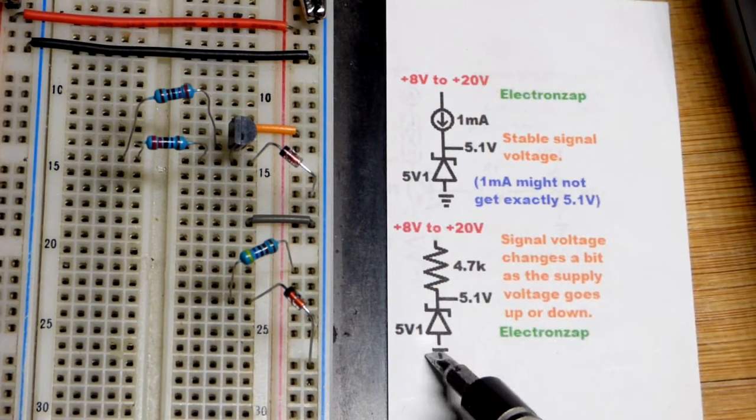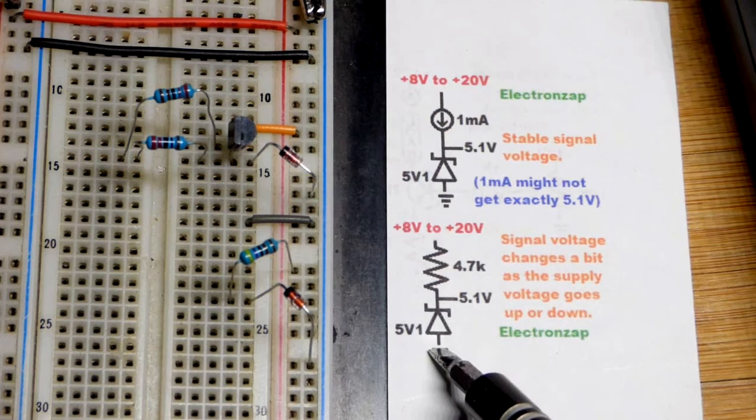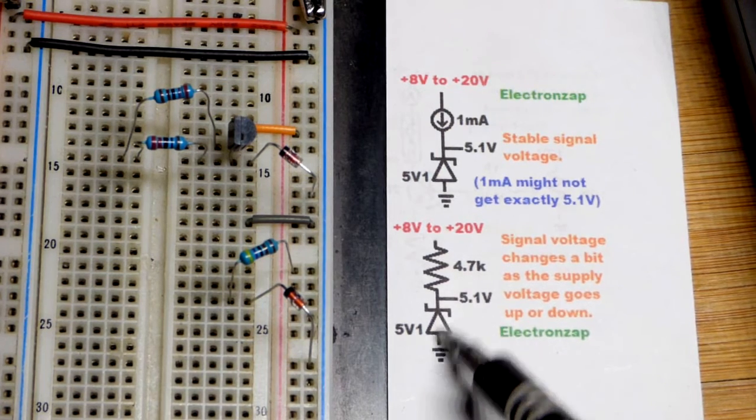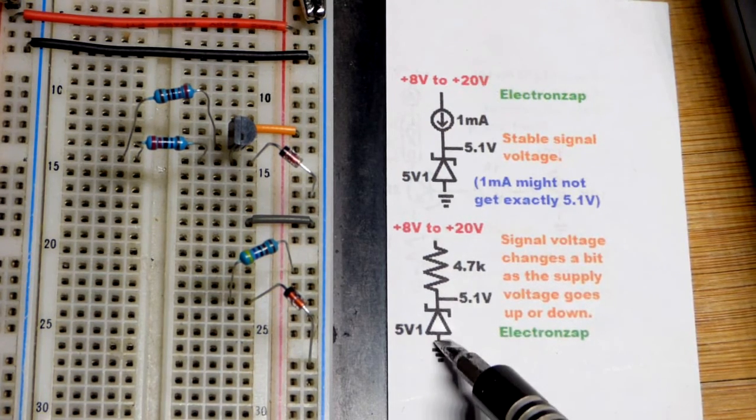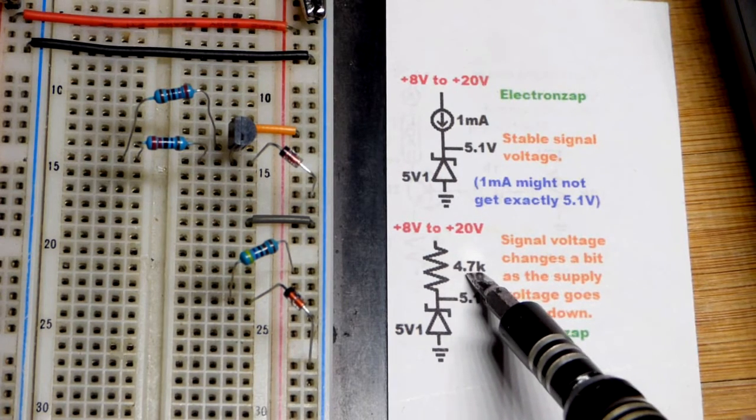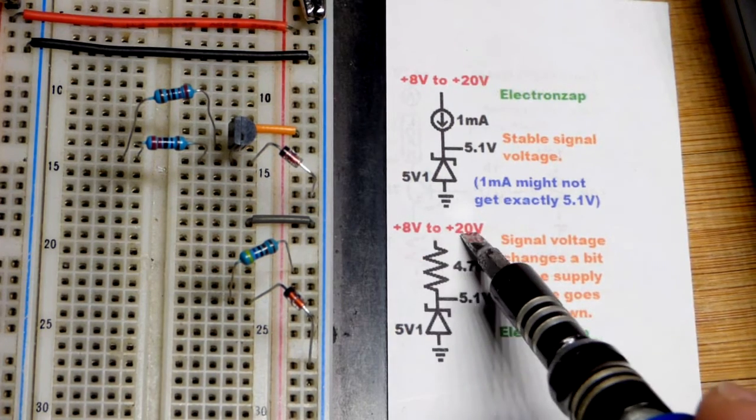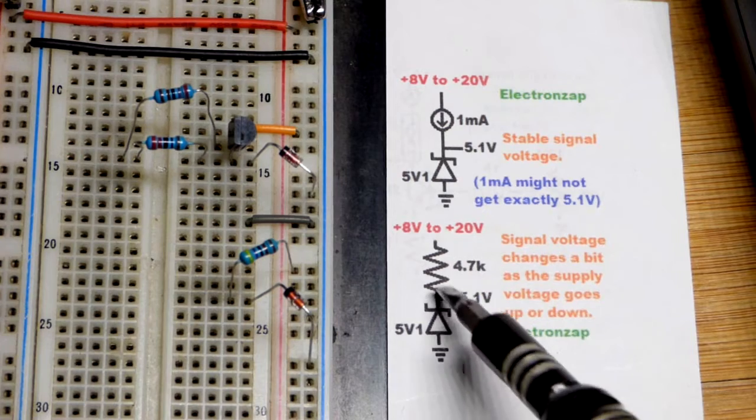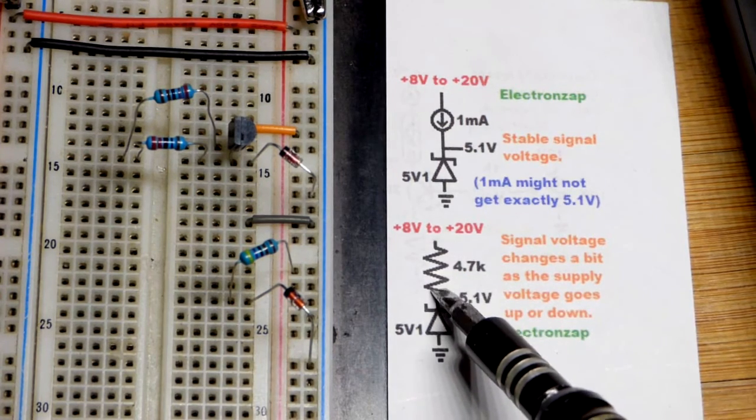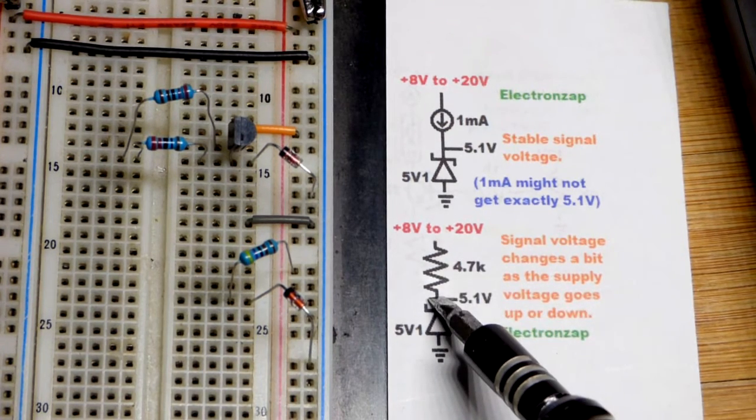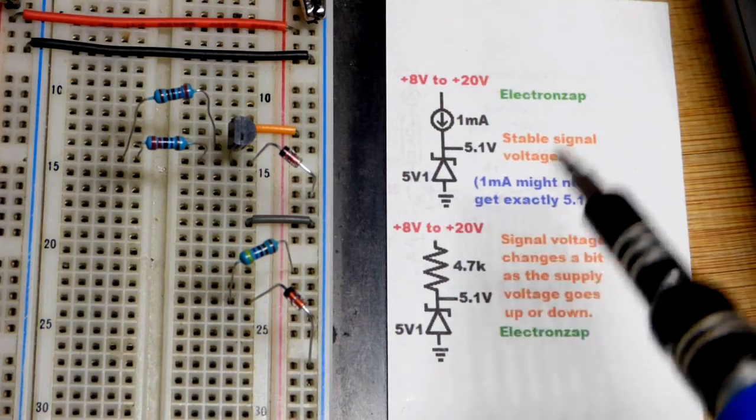We build up a Zener voltage once current starts flowing through it. Now that varies a bit based on how much current is flowing through it. So if you're just using a resistor, you'll have the supply voltage minus the Zener voltage across the resistor, and therefore current will change quite a bit as the supply voltage changes.